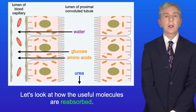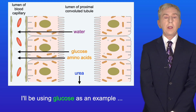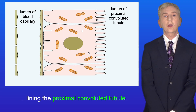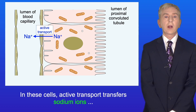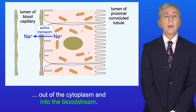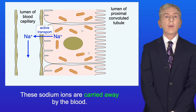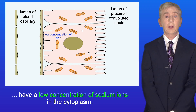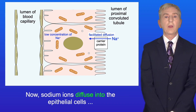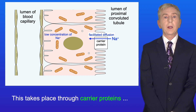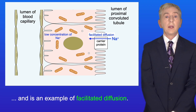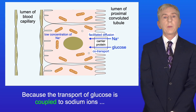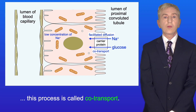So let's look at how the useful molecules are reabsorbed. This involves a number of stages and you need to learn them. I'll be using glucose as an example, but this could apply to any useful molecule. This diagram shows the epithelial cells lining the proximal convoluted tubule. Active transport transfers sodium ions out of the cytoplasm and into the bloodstream, and this process requires energy from ATP. These sodium ions are carried away by the blood, so the epithelial cells have a low concentration of sodium ions in the cytoplasm. Sodium ions then diffuse into the epithelial cells from the fluid in the proximal convoluted tubule through carrier proteins — this is an example of facilitated diffusion. At the same time, the carrier proteins also transfer glucose molecules from the fluid into the epithelial cell. Because the transport of glucose is coupled to sodium ions, this process is called co-transport.